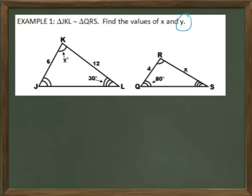Because these triangles are similar, all their corresponding angles are congruent. So angle J is 80 degrees to match angle Q. Then, because angles in a triangle must add to 180 degrees, that would leave y to be 70 degrees. There, we found the value of y.